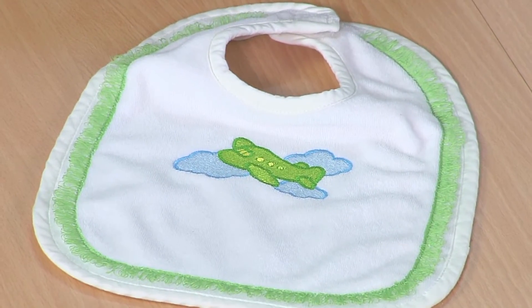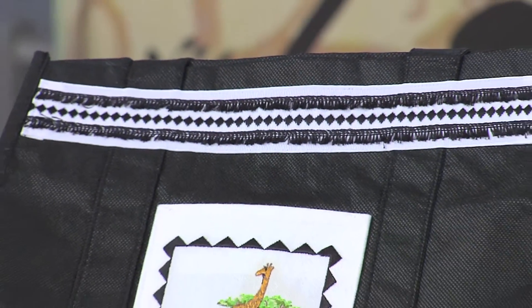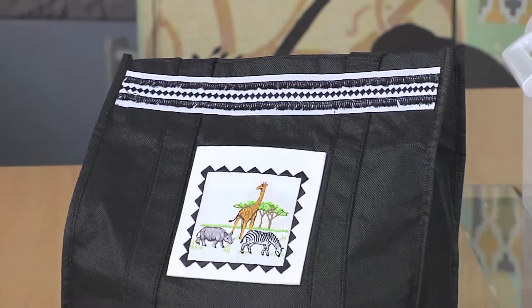There's a lot you can do with this fringe foot, like the baby bib you see here, and of course the great tote bag. You'll find complete instructions when you visit the website.